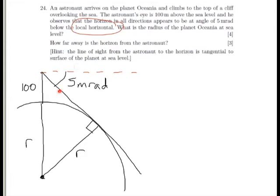If this angle here is 5 milliradians, this angle here must also be 5 milliradians, because this angle here will be 90 minus 5 milliradians, and this here is a triangle. So, we can label this as 5 millirads.